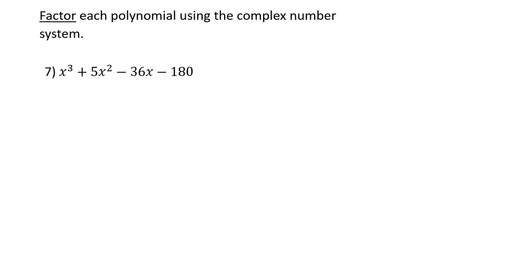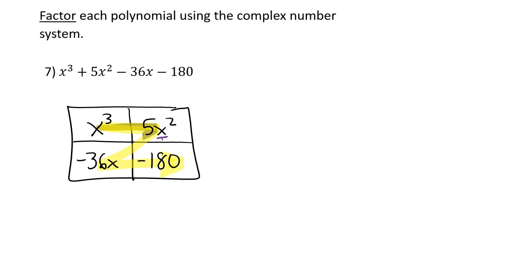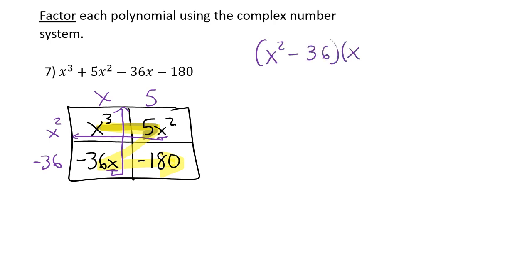Now we have a four-term polynomial. Use the box, but this time no combinations needed — fill in terms in a Z pattern: x-cubed, 5x-squared, 36x, negative 180. The trick: x-squared goes outside on the side, x goes on top. x-squared times x gives x-cubed. x-squared times 5 gives 5x-squared; x times 36 gives 36x. So the two factors are x-squared minus 36 and x plus 5.